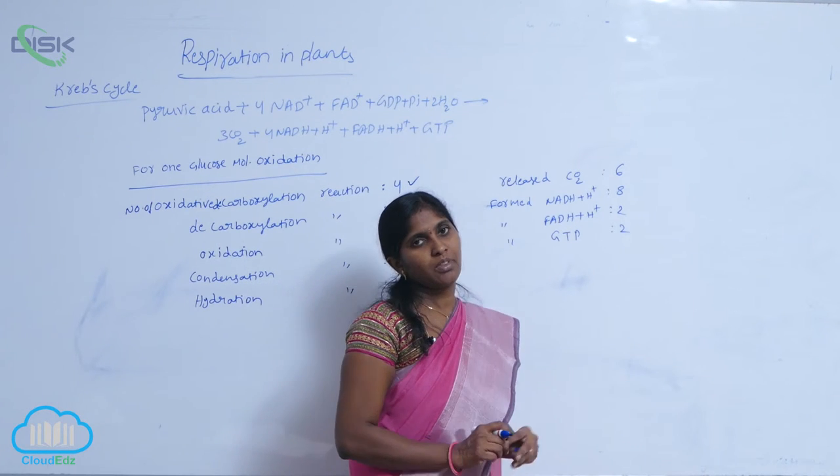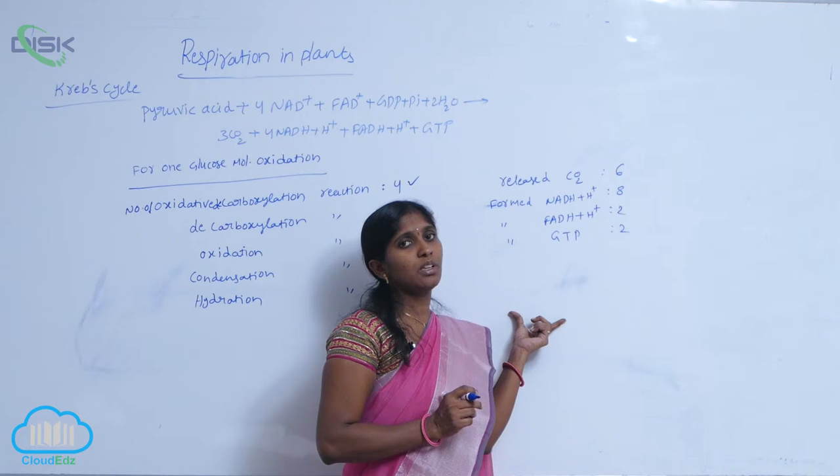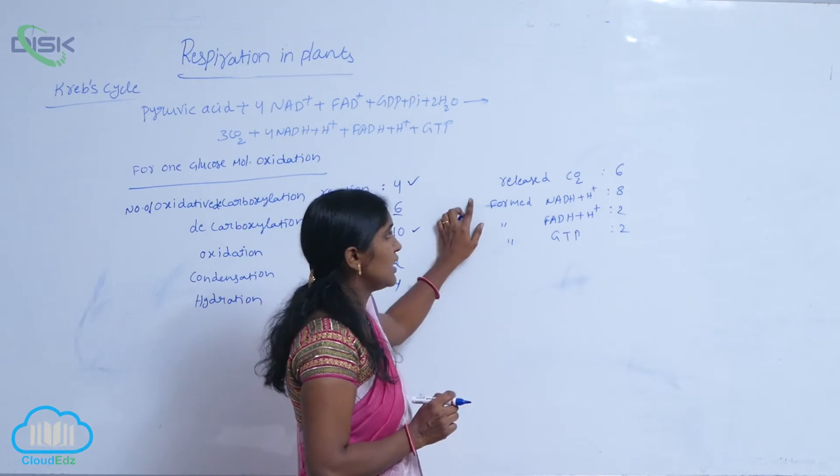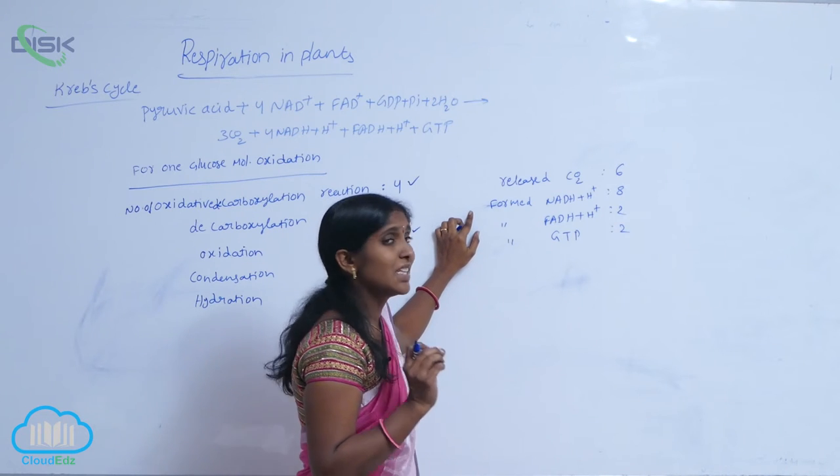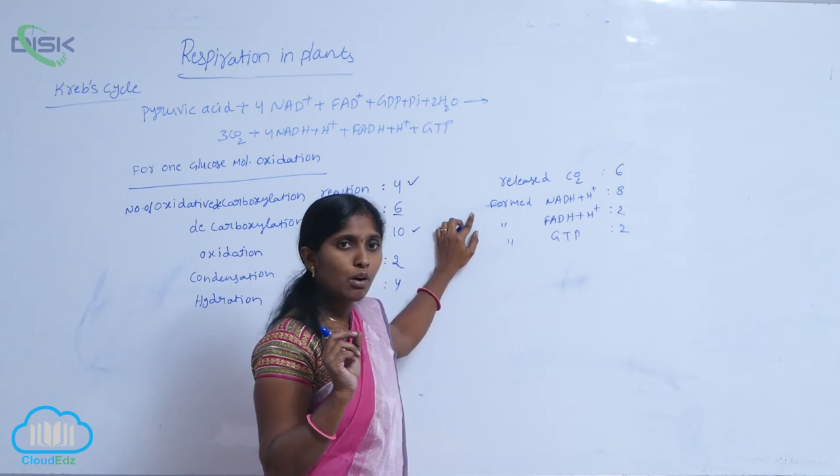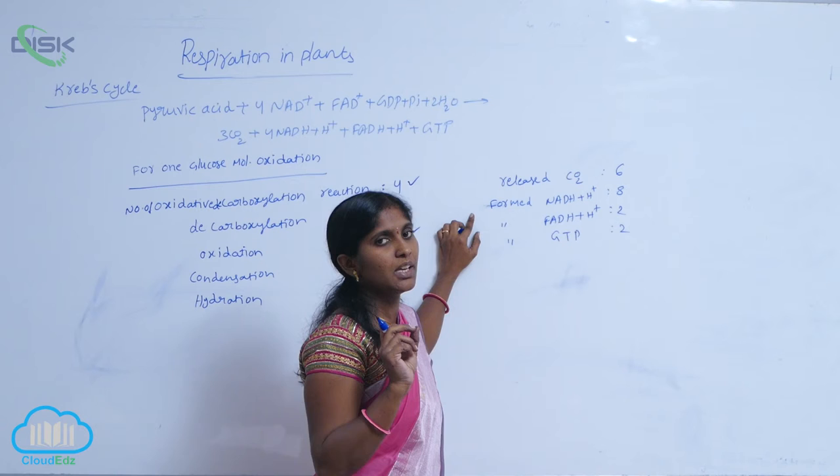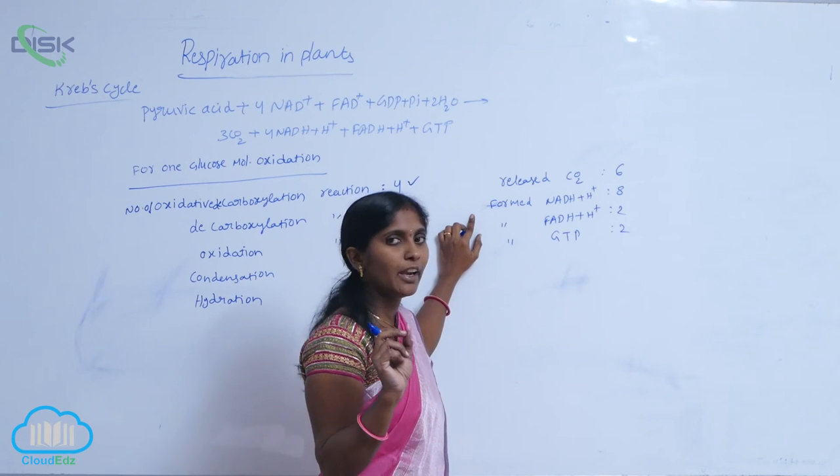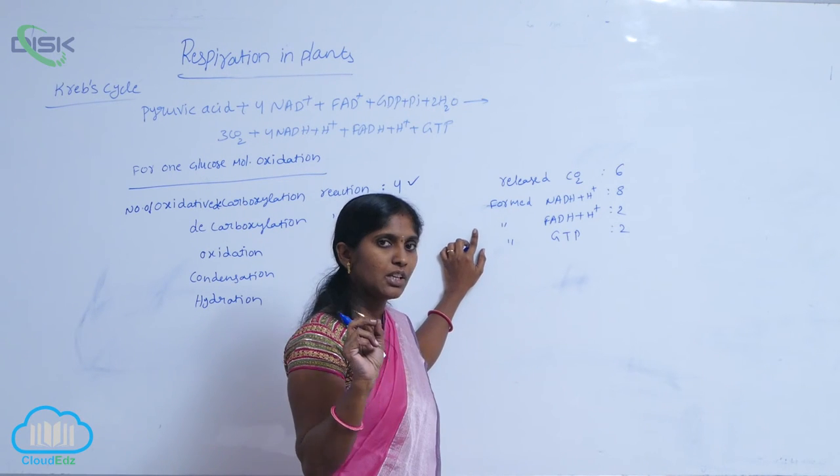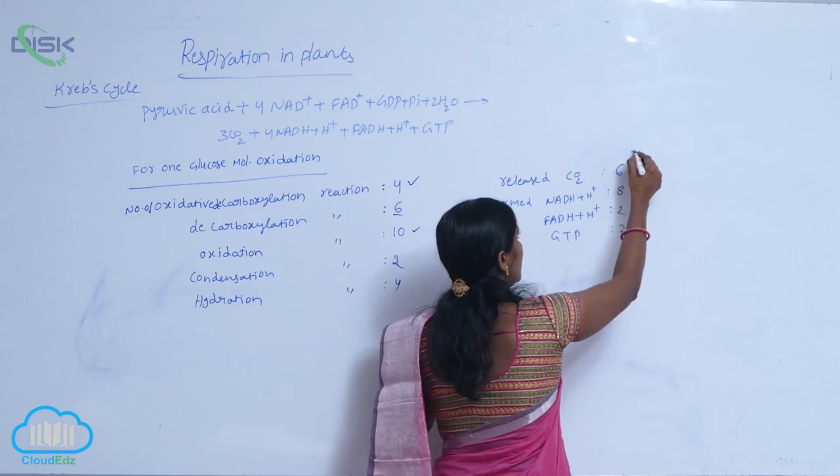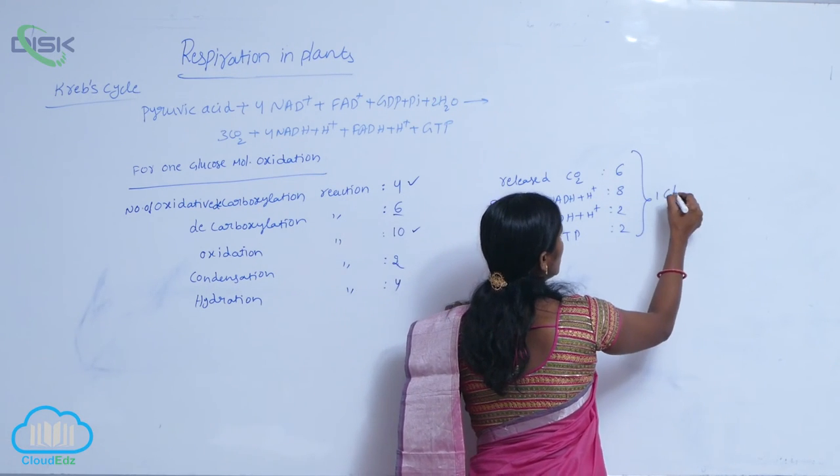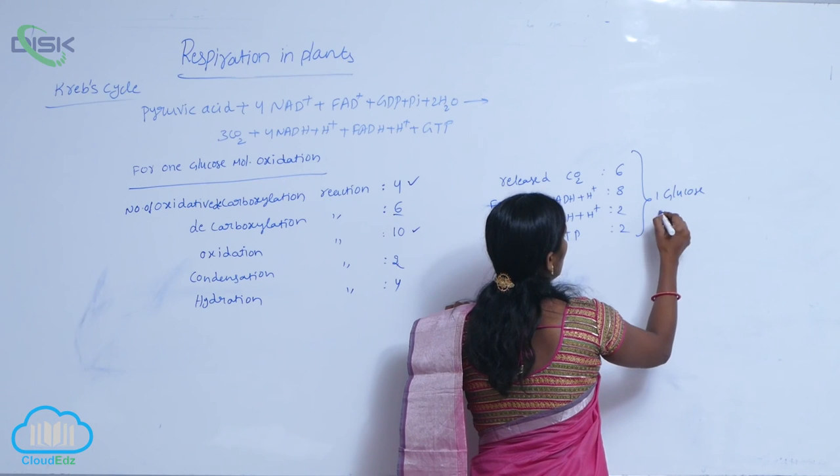Again, if one molecule is oxidized, the released number of CO2 molecules are six. Formed NADH + H+ are eight, formed FADH2 are two, and formed GTPs are two, for one glucose molecule oxidation.